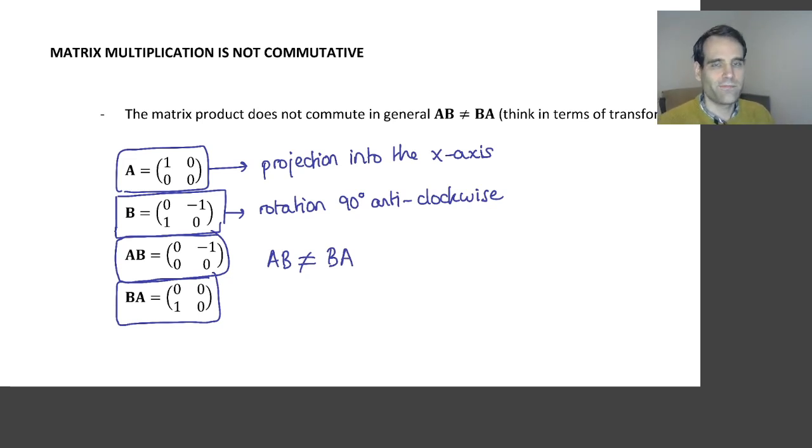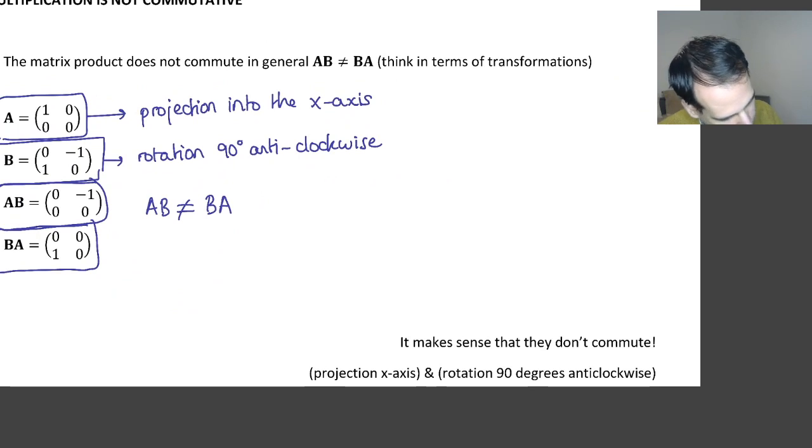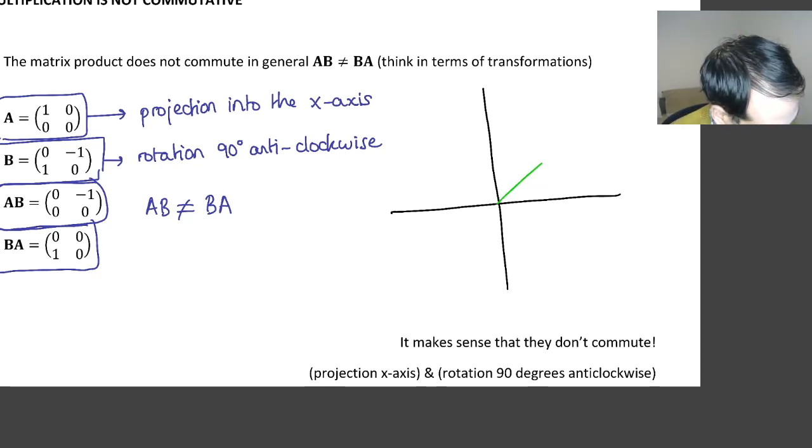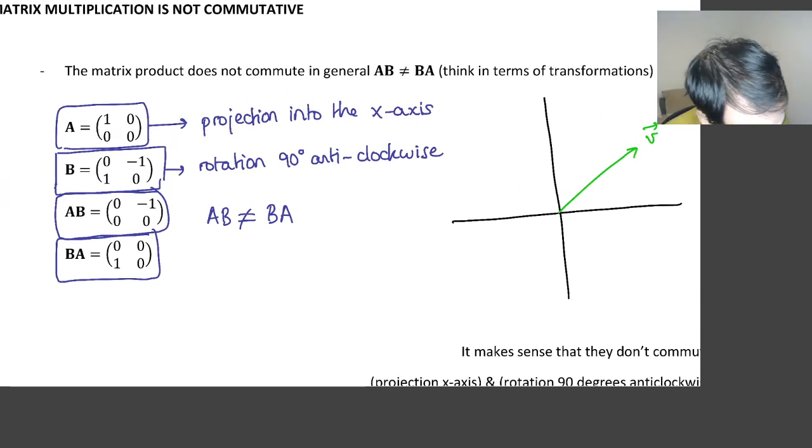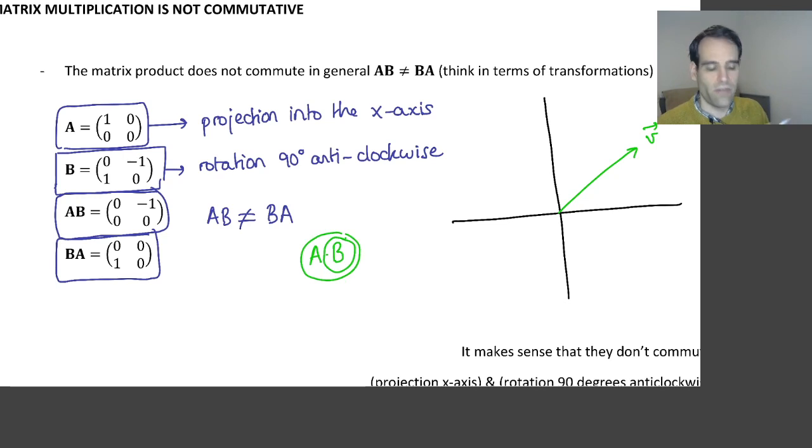Now why is this? So there is an intuitive way of explaining it. Imagine we are in a two-dimensional space and we start with a vector V. So let's apply the matrix A times B. To apply this matrix it means that we have to first do the transformation B, and then do the transformation A from right to left.